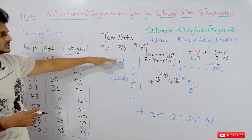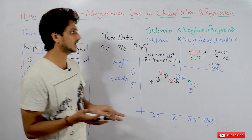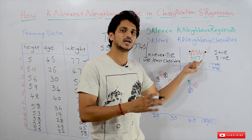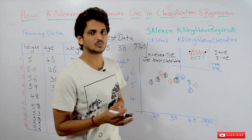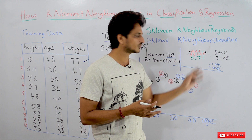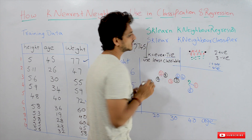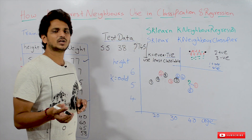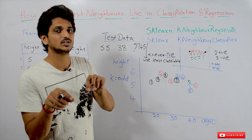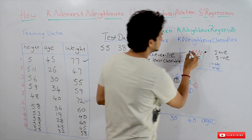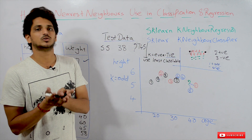In regression models KNN takes the average. Now let's take an example to understand how it works in a classification dataset, starting with binary class classification. The red points are the positive class and the green points are the negative class. Let's take a testing data point — this black point. With k equal to 2, KNN identifies the two nearest data points. Both nearest neighbors are positive, so the model predicts the testing point as a positive data point.